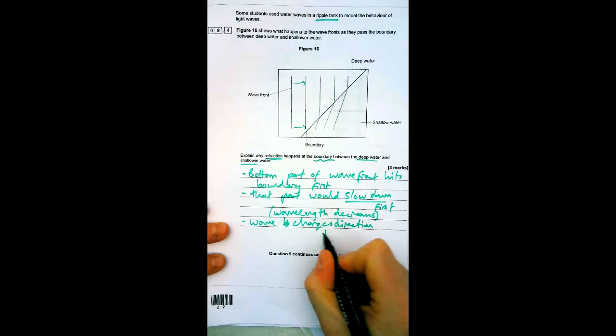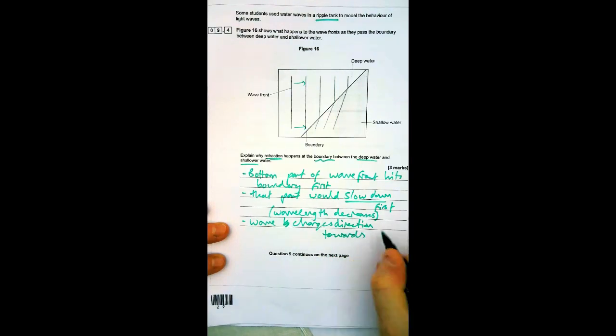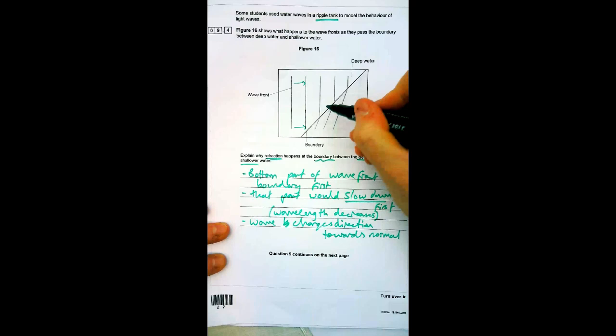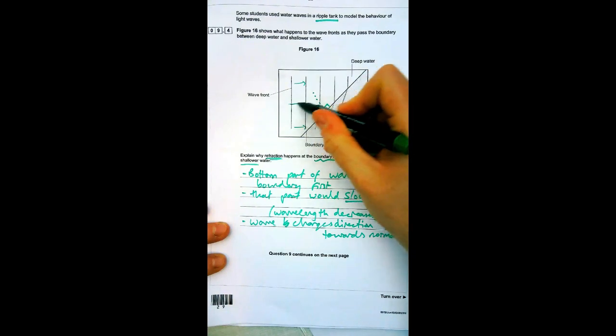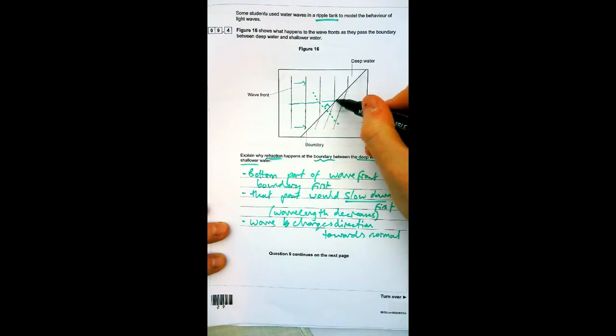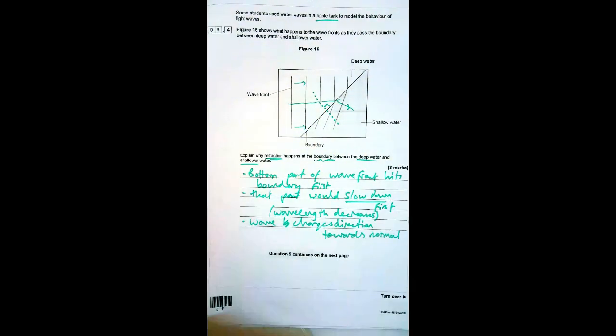You need to describe which way it changes direction—you could say down, but it's better to say toward the normal. The normal is an imaginary line perpendicular to the surface, and the wave bends more in that direction, so it's toward the normal.